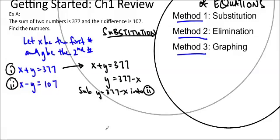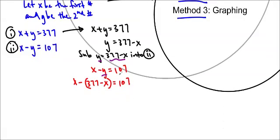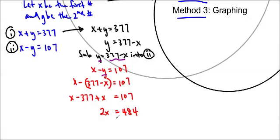You do have to write the equation again: x minus y equals 107. Substituting in, we get x minus (377 minus x) equals 107. We must put brackets around that, otherwise we'll get the wrong answer. Applying the distributive property: x minus 377 plus x equals 107, so 2x equals 107 plus 377, which is 484, giving x equals 242.